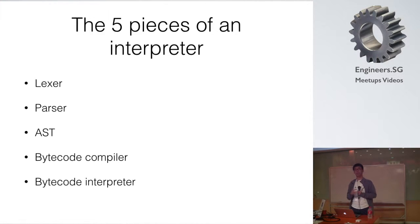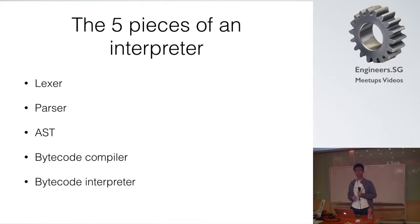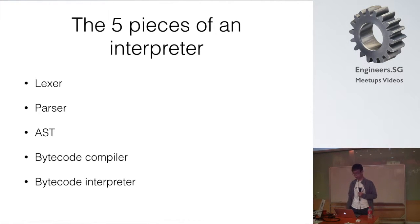What is an interpreter traditionally made of? Most interpreters consist of five components: a Lexer, a Parser, an abstract syntax tree or AST, a bytecode compiler, and a bytecode interpreter. While some interpreters might leave out one or two of these — for example, some might execute the AST directly instead of compiling to bytecode — most interpreters are made up of these five components.